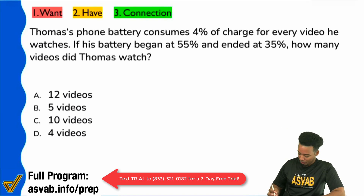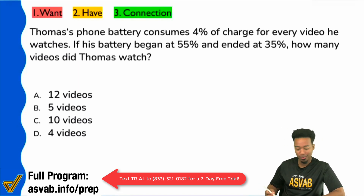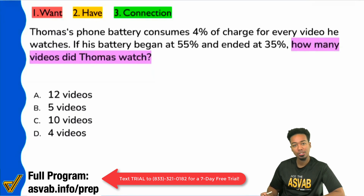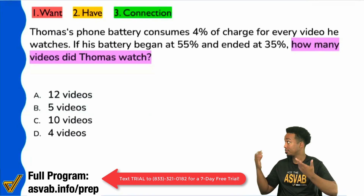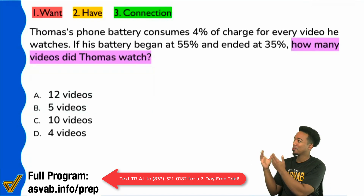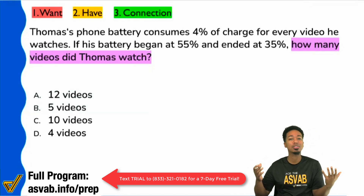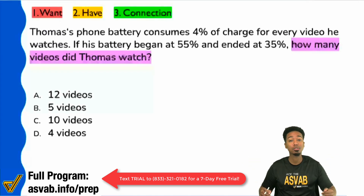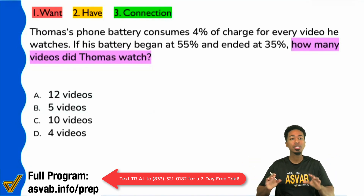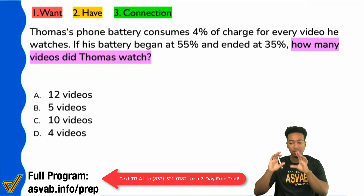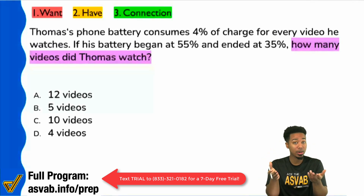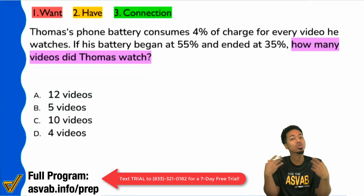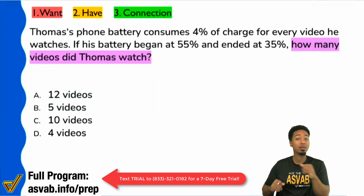First things first, my Party People — we always want to read the question first, every single time. The question says: how many videos did Thomas watch? So this problem is about a certain person watching videos and they want to know how many videos this person consumed. Now the point is to read the question first so we can dial into the information. All I care about is the number of videos that Thomas watched and any information related to that.